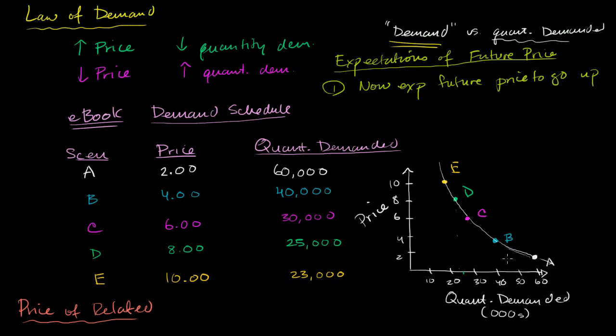They are more, the current demand will go up at any of these price points. So at $2, more people will want to buy it because they think it's going to go up.